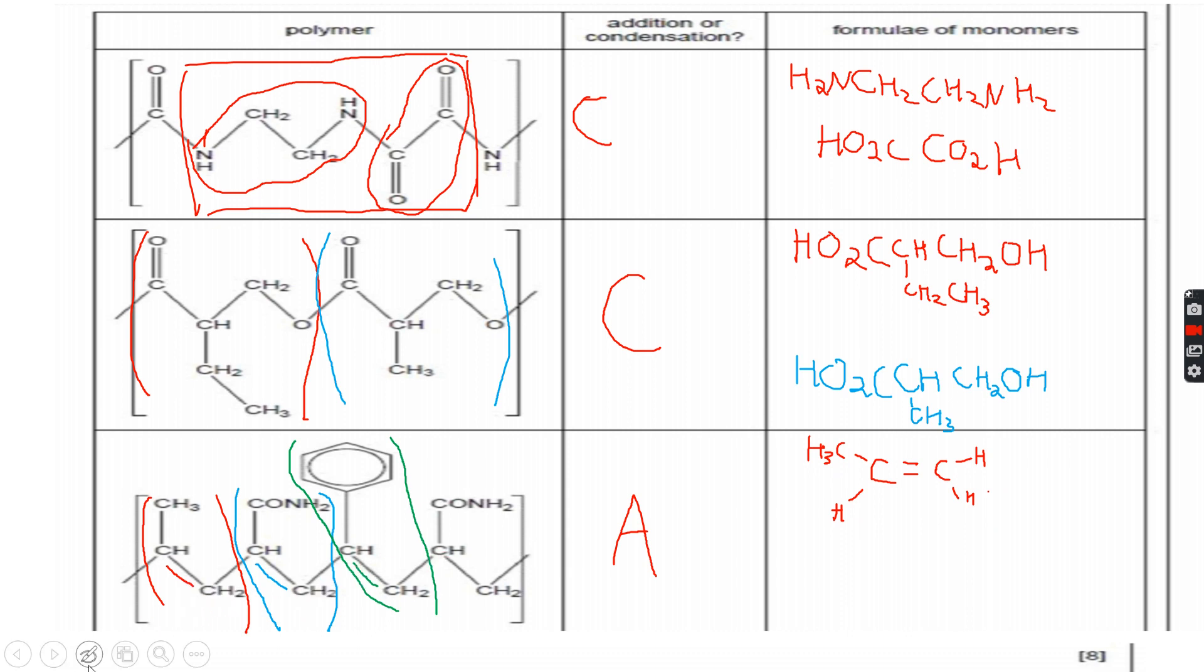Now the second monomer, which we used blue for, will be C=C, and this will be attached to a CONH2 group and H, H, H.